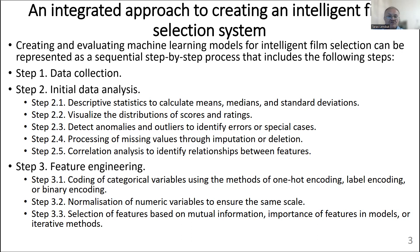Then feature engineering, which has three steps: first, encoding of categorical variables using methods such as one-hot encoding, label encoding, and binary encoding; then normalization of numerical variables to ensure the same scale; and selection of features based on mutual information, importance of features in models, or iterative methods.